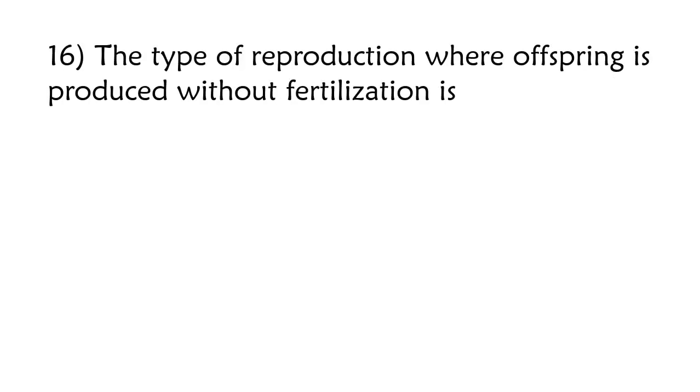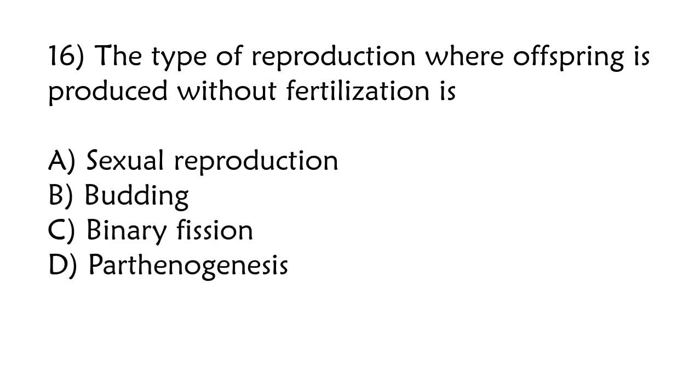The type of reproduction where offspring is produced without fertilization is sexual reproduction, budding, binary fission, parthenogenesis. The correct answer is option D, parthenogenesis.